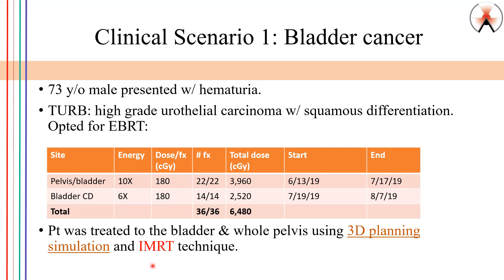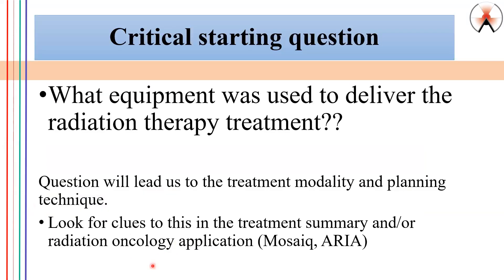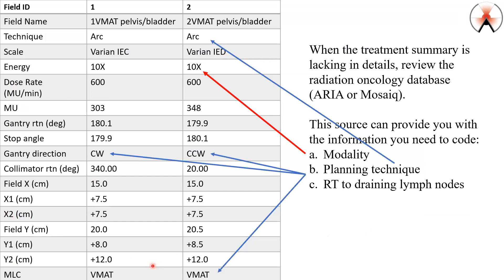So I know IMRT is a good indication, but let's see confirmation of that in the software. Back to that critical question: what equipment was used to deliver that treatment? This is information that you can find in Mosaic or Aria for any and every patient that is going to receive external beam radiotherapy. The blue arrows give you information on the planning technique.